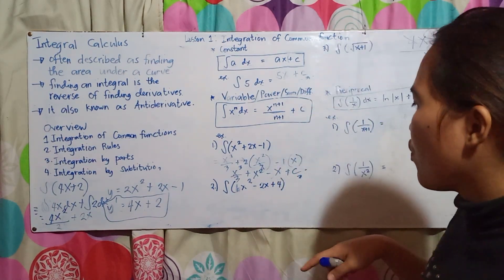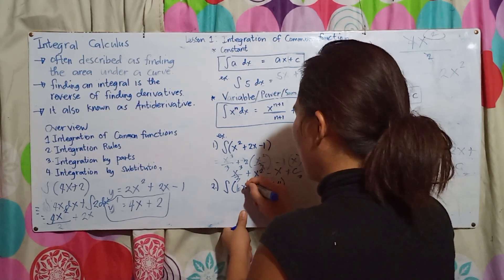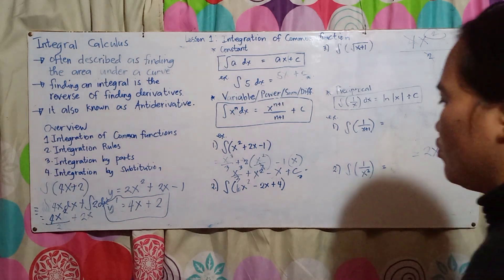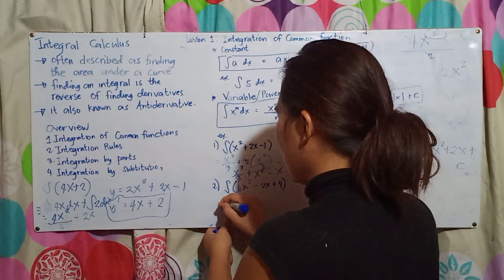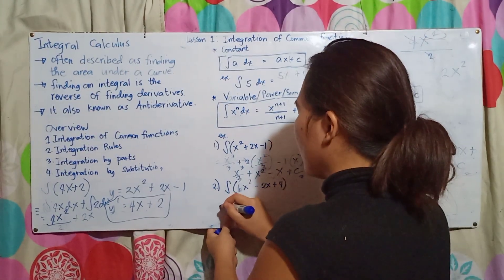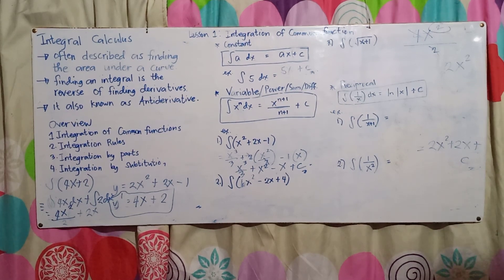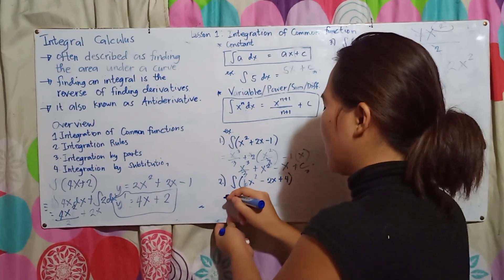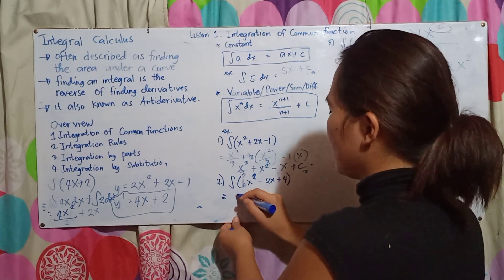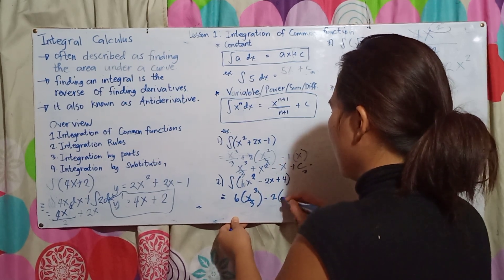Next example: the integration of (6x² − 2x + 4) dx. For 6x²: add 1 to the exponent (2+1=3), giving 6x³/3. For −2x: the exponent 1 becomes 2, giving −2x²/2.